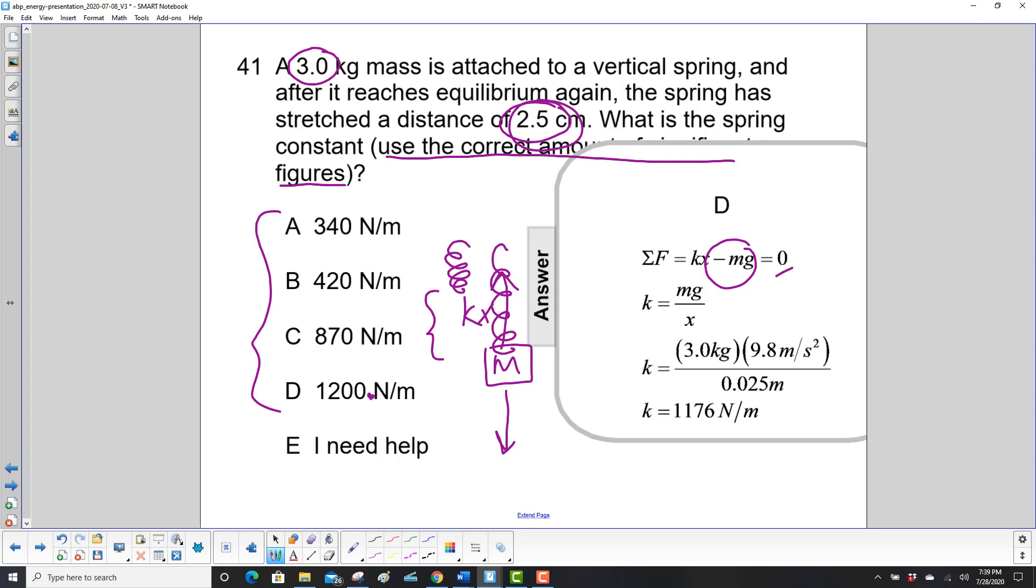So you have kx equals mg. Divide both sides by x to isolate k. Put in our numbers: there's 3 kilograms, there's the acceleration due to gravity.